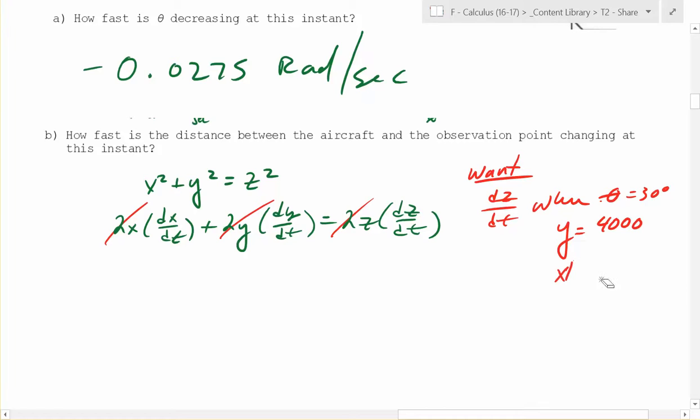Natalie, what is it? You have the number over there, 6,000 something. Like this? 2.2? Right. So you know that x is 6,928.2. And then you need dx dt. Oh, you know what that is because that's the speed of the plane, right? So what is it?